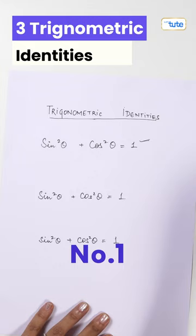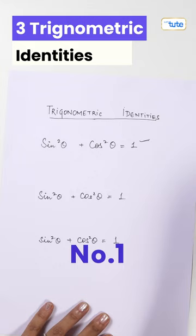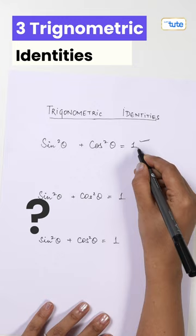Well students, we all know that there are three trigonometric identities, right? So this one which we all know: sine square theta plus cos square theta is equal to one. But what about the other two? So what we are going to do is we will write this again, which I have already written for you, and now we will derive the other two identities from this.